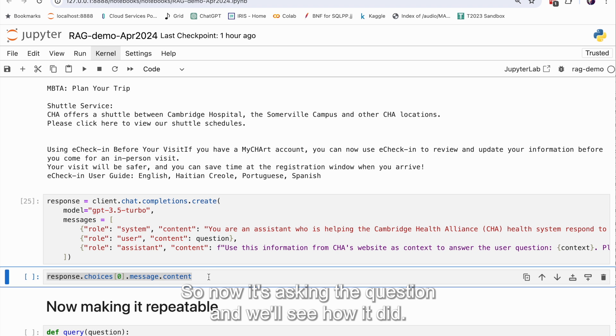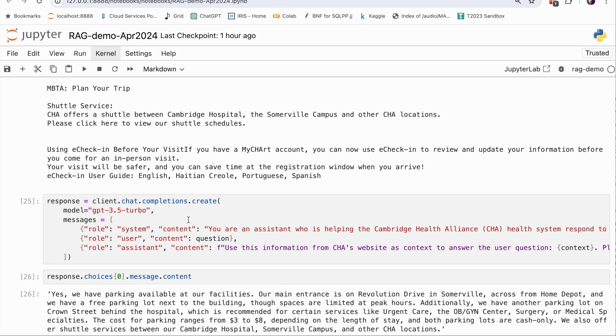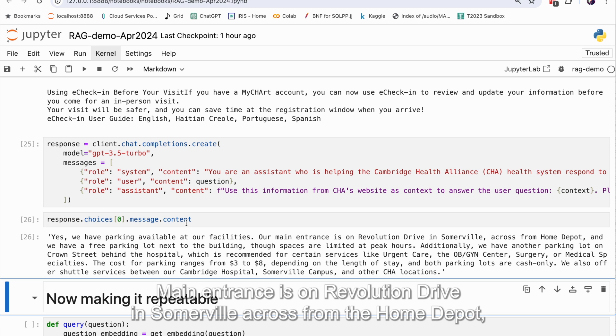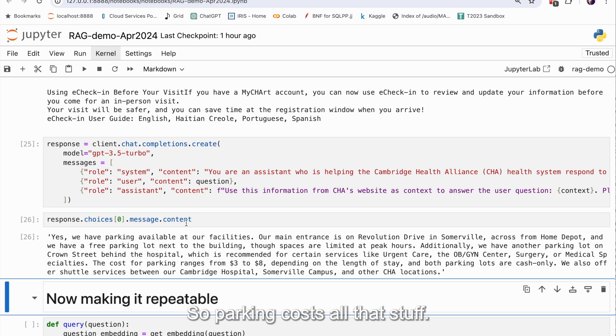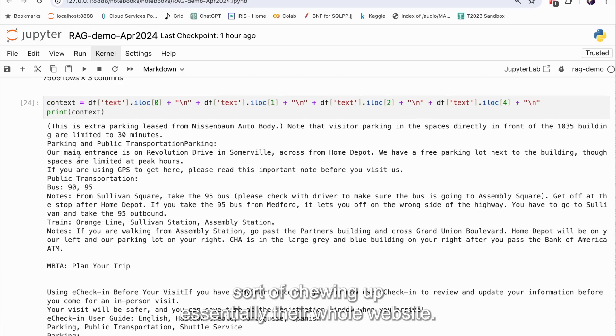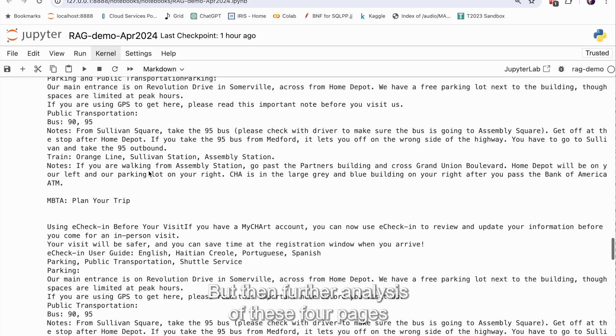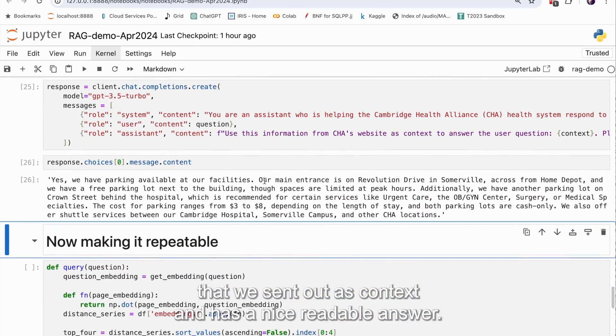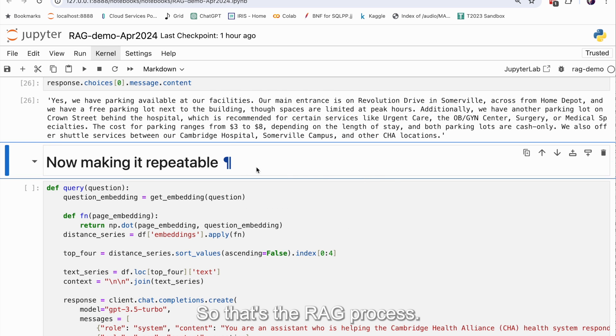So now it's asking the question and we'll see how it did. Yes, we have parking at our facilities. Main entrance is on Revolution Drive in Somerville across from the Home Depot. Parking costs, all that stuff. So see how helpful this answer ended up being, sort of chewing up essentially their whole website, but then further analysis of these four pages that we sent it as context and as a nice readable answer. So that's the RAG process.